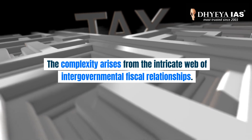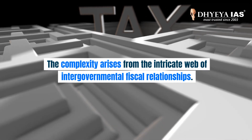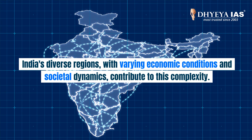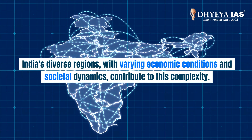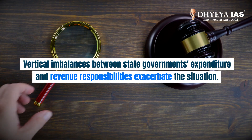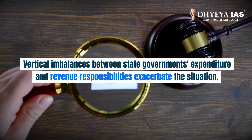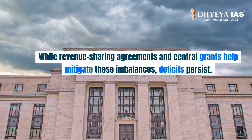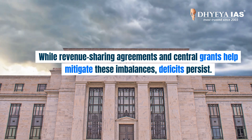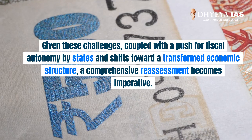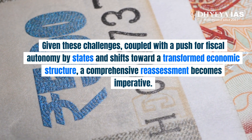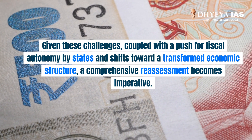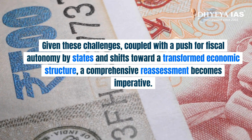The complexity arises from the intricate web of intergovernmental fiscal relationships. India's diverse regions, with varying economic conditions and societal dynamics, contribute to this complexity. Vertical imbalances between state governments' expenditure and revenue responsibilities exacerbate the situation. While revenue-sharing agreements and central grants help mitigate these imbalances, deficits persist. Given these challenges, coupled with a push for fiscal autonomy by states and shifts toward a transformed economic structure, a comprehensive reassessment becomes imperative.